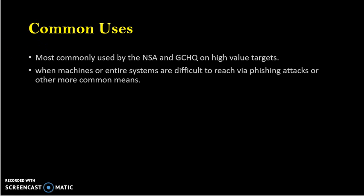Common uses. Most commonly, this attack method is used by the NSA and GCHQ. The GCHQ is an intelligence agency that works for the government of Great Britain. It's also used when machines or entire systems are difficult to reach via regular phishing attack methods or other more common methods. So these are used for high-value targets that are difficult to reach.